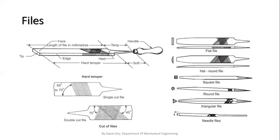Another type is the half round file. The half round file has one flat side and one curved side. The flat side is double cut and the curved side is single cut. It is not a semi-circle but only about one-third of a circle. Coarse and smooth grades are also used. This is an extremely useful double-purpose file for flat surfaces and for curved faces which are too large for the round file to be used.